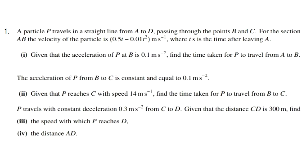First question. A particle P travels in a straight line from A to D, passing through the points B and C. For the section AB, the velocity of the particle is 0.5t − 0.01t² meters per second, where t seconds is the time after leaving A. Given that the acceleration of P at B is 0.1 m/s², find the time taken for P to travel from A to B.